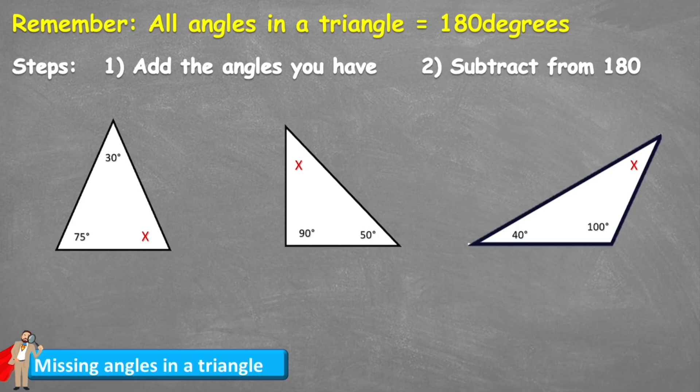So the first thing we need to remember is that all angles in a triangle will equal 180 degrees. That doesn't matter what shape our triangle is, we could have it this first shape, second shape or even this third shape, all of the angles inside these triangles will equal 180 degrees.